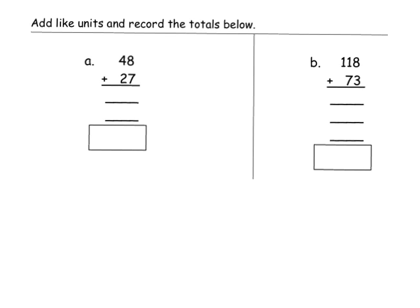This problem here: we've got eight ones plus seven ones — that gives us fifteen ones. And then we have four tens plus two tens — that's six tens, so that's sixty. Forty plus twenty is sixty. And now we're going to add those together: five plus zero is five, and one ten plus six tens is seventy. So the answer is seventy-five.